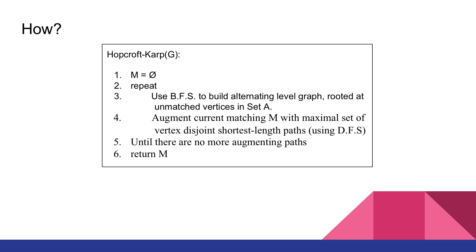So now we understand the basic concepts, we're going to look at the Hopcroft-Karp algorithm in a bit more detail. So I've got the pseudo-code here. First thing that you can see is we initialize the current matching to be empty. Then we enter a loop where we use breadth-first search to build an alternating level graph rooted at unmatched vertices in set A, which is the set on the left. Next, we augment the current matching M with a maximal set of vertex disjoint shortest length paths and we use depth-first search to do this. We carry on repeating these steps until there are no more augmenting paths and then finally we return M.